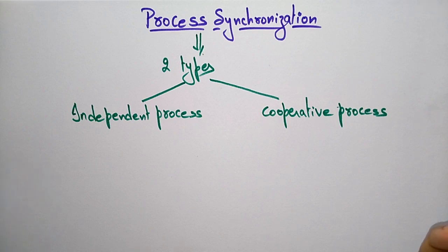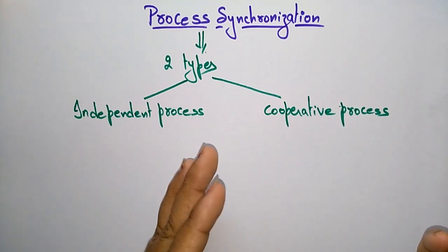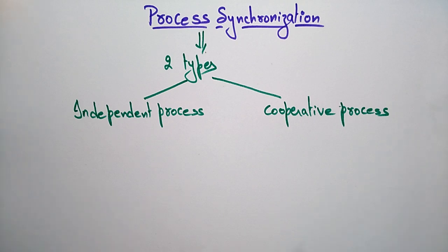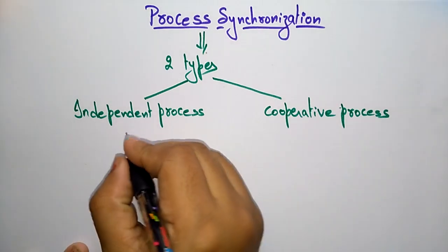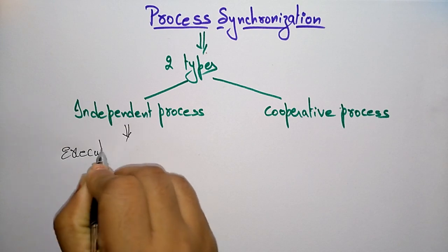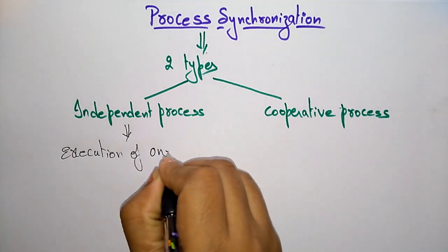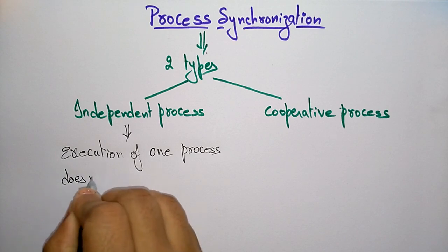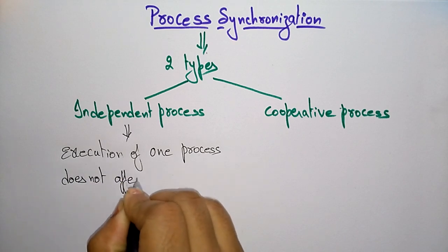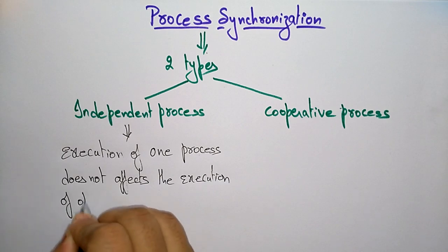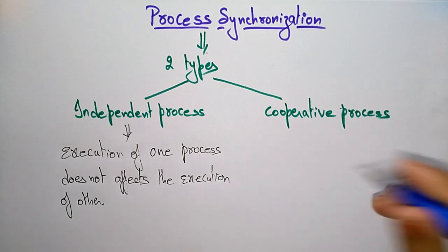Suppose if you have one or more processes, there is no relationship between one process and another process — each process is independent. Independent process means the execution of one process does not affect the execution of others. That is what you call an independent process.